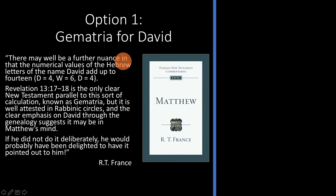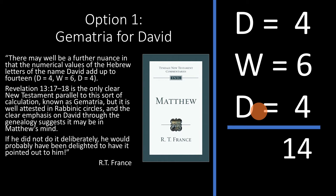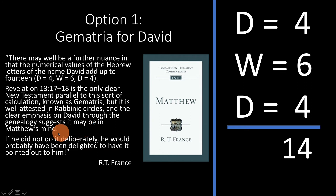The first option is Gematria. R.T. France lays out this option in his commentary. He writes: 'There may well be a further nuance in that the numerical values of the Hebrew letters for the name David add up to 14.' In Hebrew, D equals 4, W equals 6, D equals 4 — adding up to 14. He also notes that Revelation 13:17–18 is the only clear New Testament parallel to this sort of calculation, known as Gematria, though it is well attested in rabbinic circles. Honestly, I don't really like this explanation, and it seems R.T. France isn't fully convinced either — at the very end he says Matthew may not have done this deliberately.